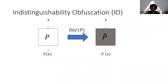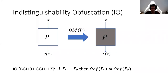IO gives you a way of taking a program P and obfuscating it to derive a program P-tilde, which is function equivalent to P. So on every input X, P of X and P-tilde of X give you the exact same output. But the obfuscated program P-tilde should hide all of the internal implementation details of the original program P. If you take two functionally equivalent programs P1 and P2 and obfuscate them, you cannot distinguish which one you started with.